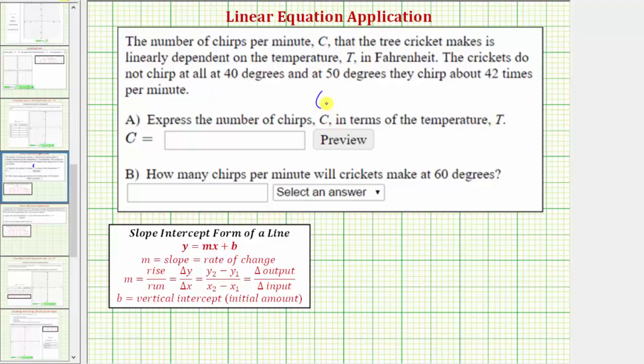Each ordered pair will be in the form T comma C, where T is the temperature in Fahrenheit and C is the number of chirps per minute. Going back to the given information, the crickets do not chirp at all at 40 degrees, this would be the ordered pair (40, 0). The first value is the temperature, the second value is the number of chirps per minute.